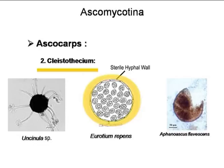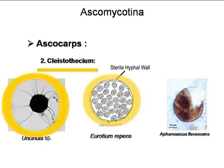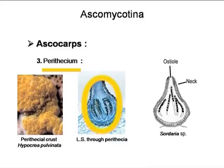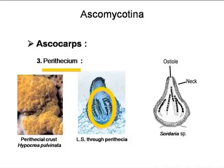In the second type of ascocarp, that is cleistothecium, peridium is present, which is composed of sterile hyphae. These are circular ball-like structures that may be provided with projections or external hyphae, or may not be. Inside the covering, the asci containing ascospores are present. The next type of ascocarp is called perithecium, which is a flask-shaped structure from the base of which the asci and ascospores develop. In all these cases, ascospores are endogenous and confined within the sac-like structure, that is the ascus.